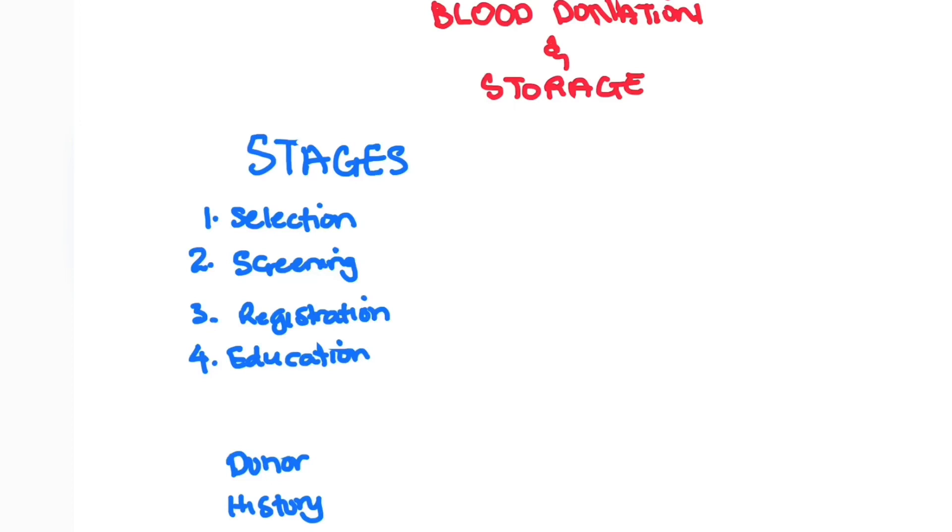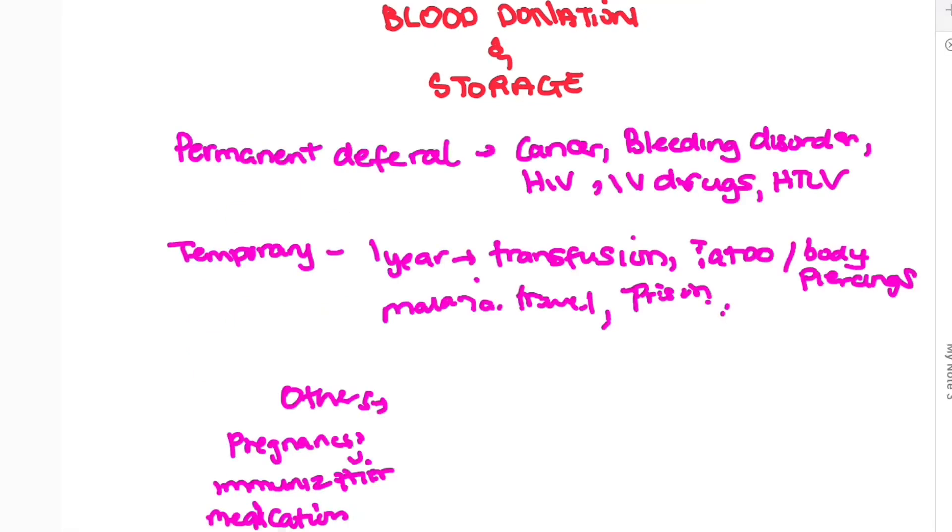The next process, very important, is the history of the donor. This is where we review the past medical illnesses or any treatment that the patient has received. This is more important for allogenic transfer, which is to others, rather than to yourself if it's autologous. You're going to review the past history. Permanent deferral: with these, you cannot donate blood at all, not now or anytime in the future. If you have any cancer or malignancies, if you have any bleeding disorders such as hemophilia A or B, if you have HIV, if you're an IV drug user, or if you have HTLV.